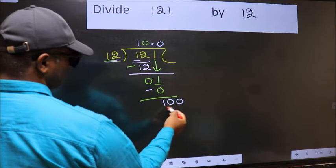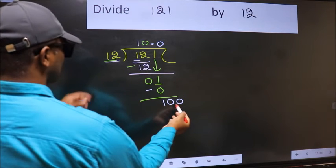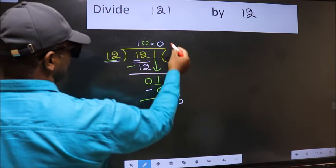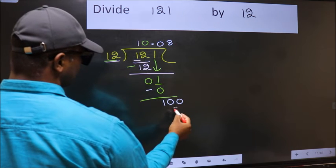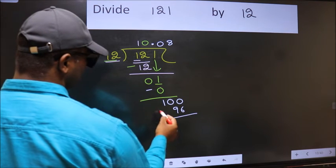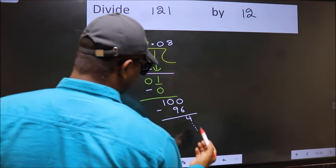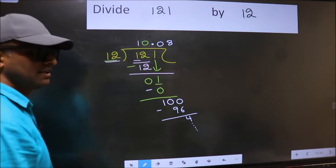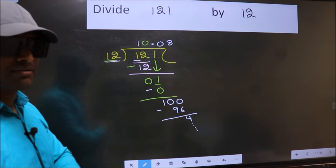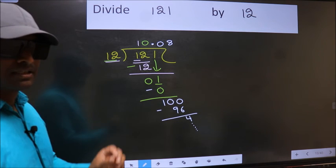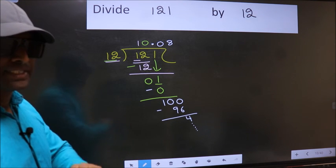So 100. A number close to 100 in 12 table is 12 times 8, which is 96. Now we should subtract, we get 4. You continue the division. I am not doing that. Did you understand where the mistake happens? You should not do that mistake.